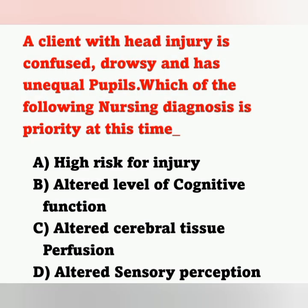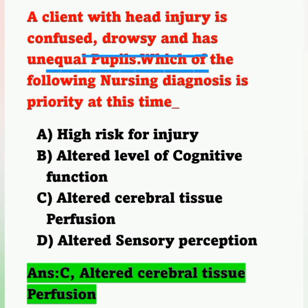Question 15: A client with head injury is confused, drowsy, and has unequal pupils. Which nursing diagnosis is the priority? Options: A) high risk for injury, B) altered level of cognitive function, C) altered cerebral tissue perfusion, D) altered sensory perception. The correct answer is option C — altered cerebral tissue perfusion, as blood supply assessment comes first.